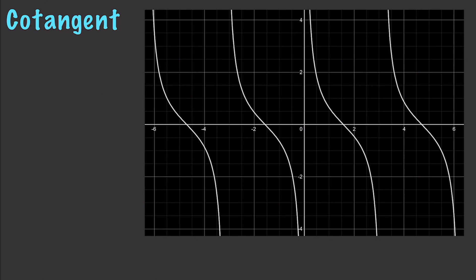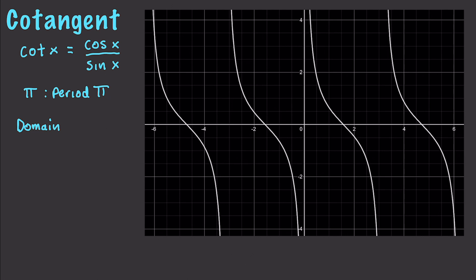This brings us to cotangent functions. Cotangent is just a reflection of the tangent. Cotangent of an angle equals cosine of that angle over the sine of that angle. The asymptotes lie where sine is 0, which occurs at 0 as well as at pi intervals. The period is also pi. The domain is all real numbers such that the angle is not equal to k times pi, where k is an integer.